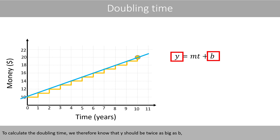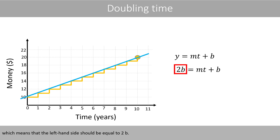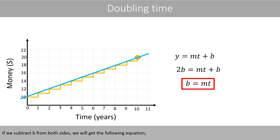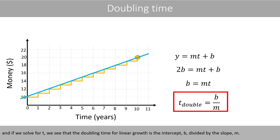To calculate the doubling time in general, Y should be twice as big as B, which means the left-hand side should equal two times B. If we subtract B from both sides, we get the following equation, and if we solve for T, we see that the doubling time for linear growth is the intercept B divided by the slope M.